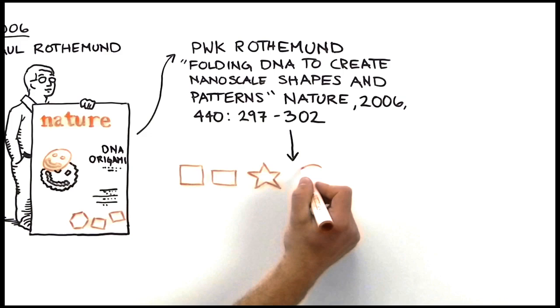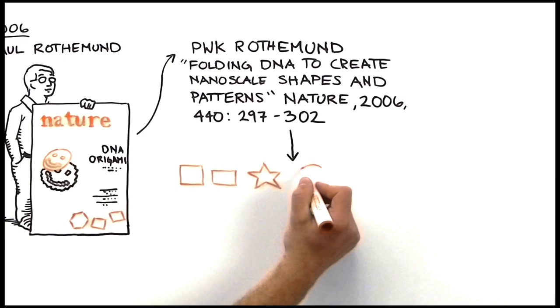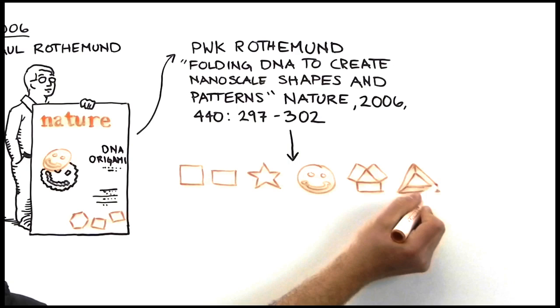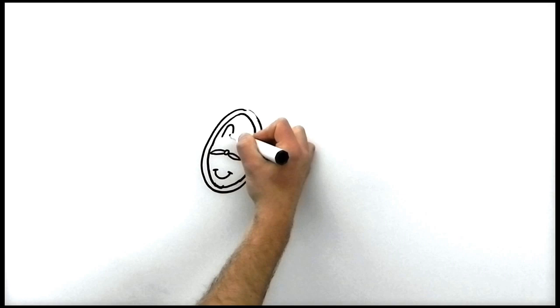So what we do is write computer programs to design sequences of DNA, such that when we mix them together, they self-assemble into desired shapes with dimensions of 10 to 100 nanometers. Recently, we worked in William Shih's lab to extend the DNA origami method to create three-dimensional shapes.